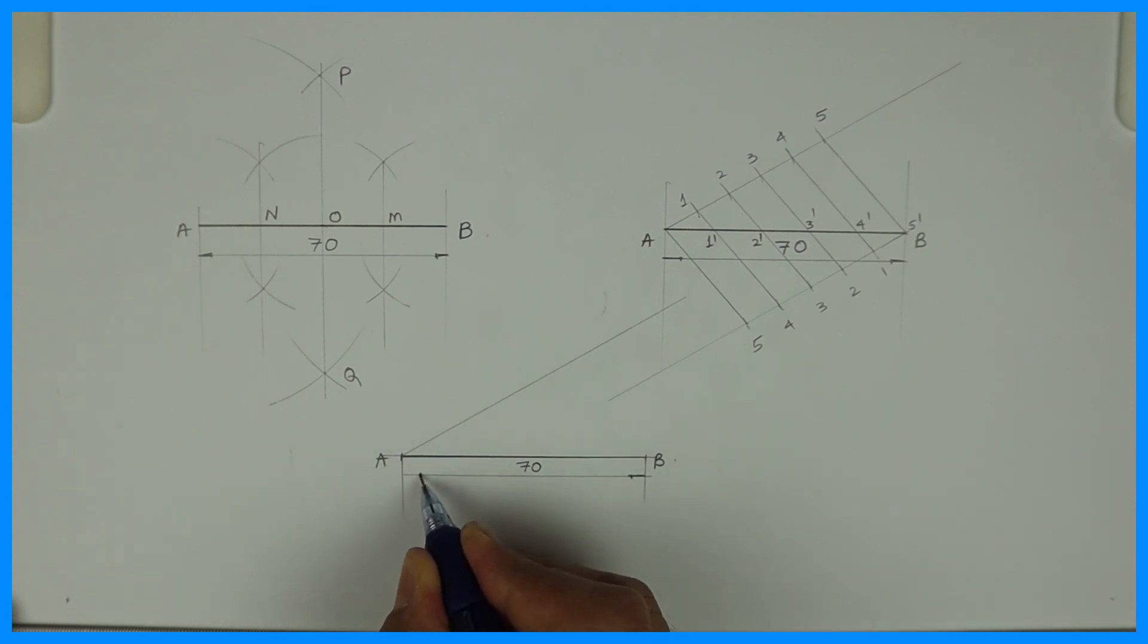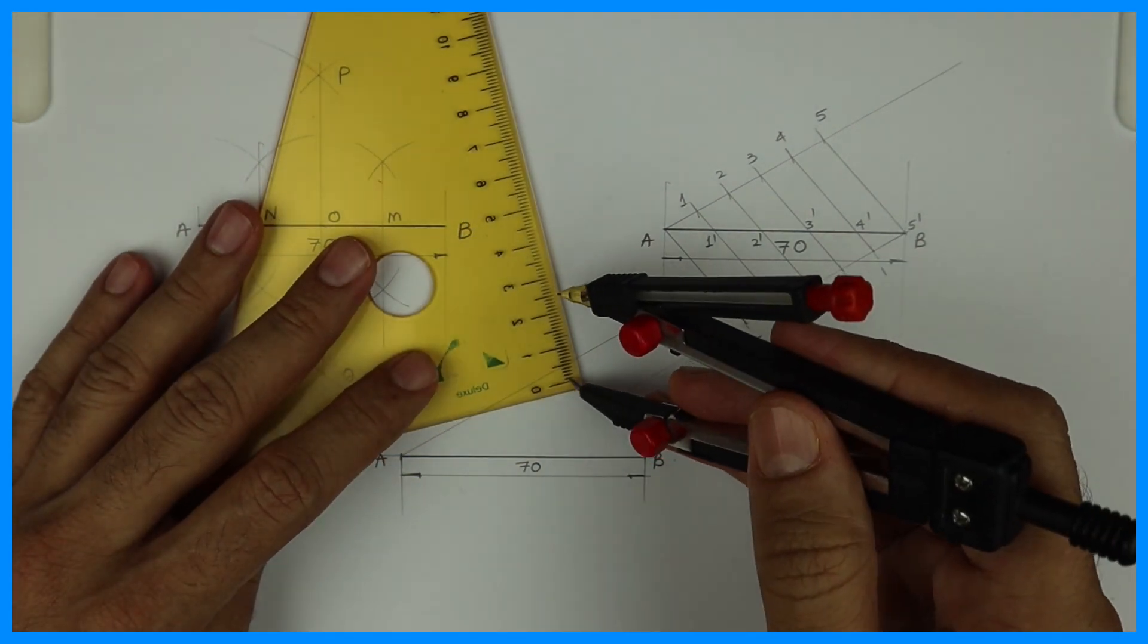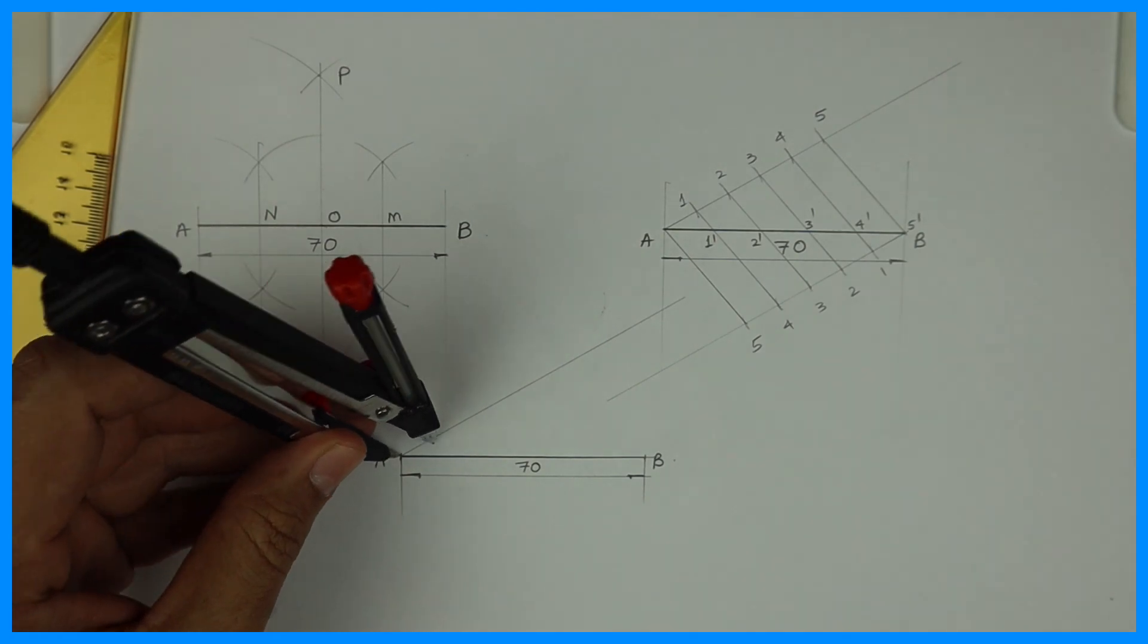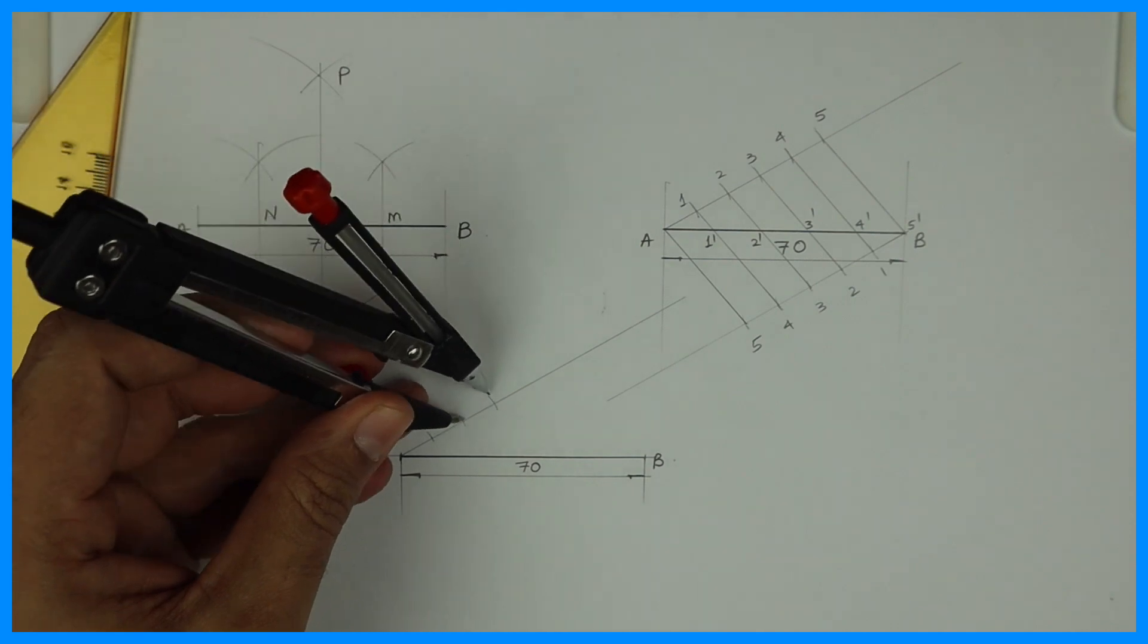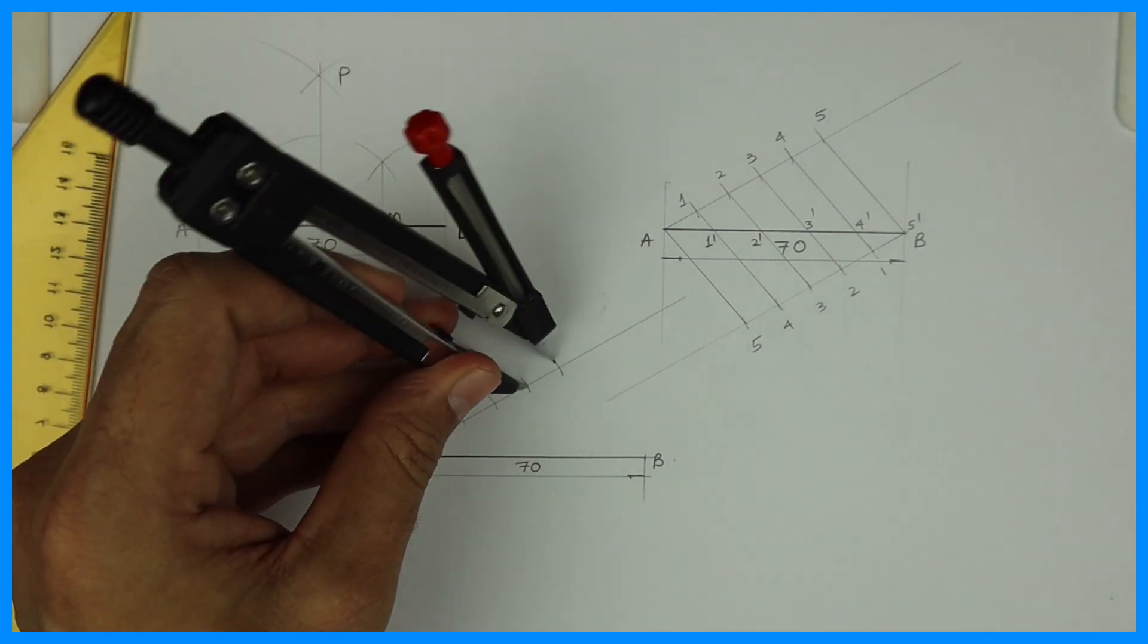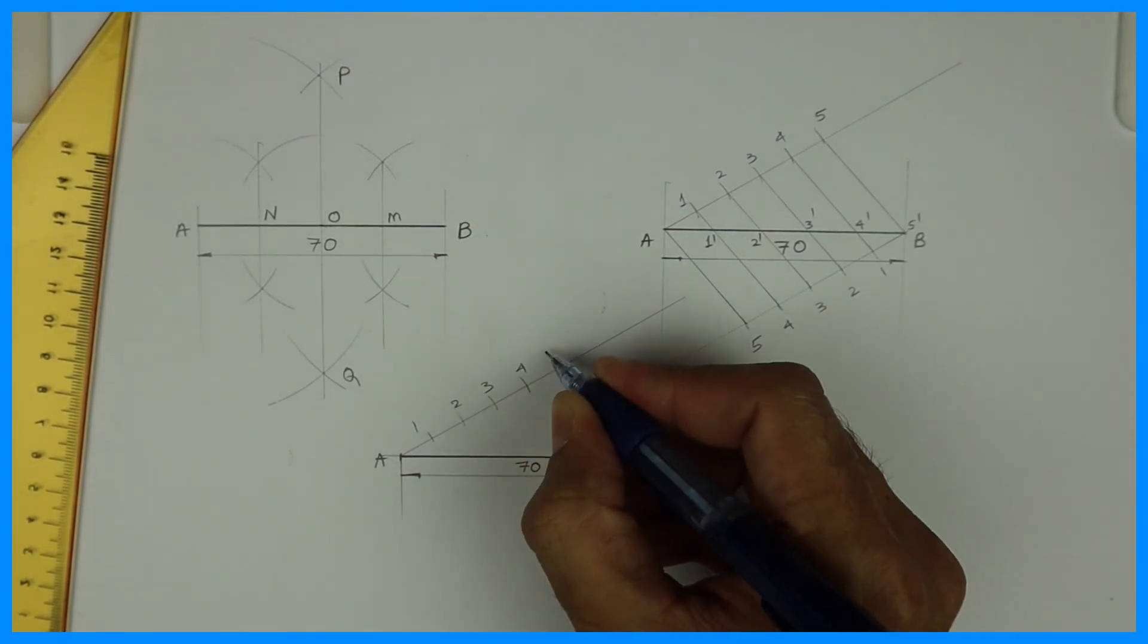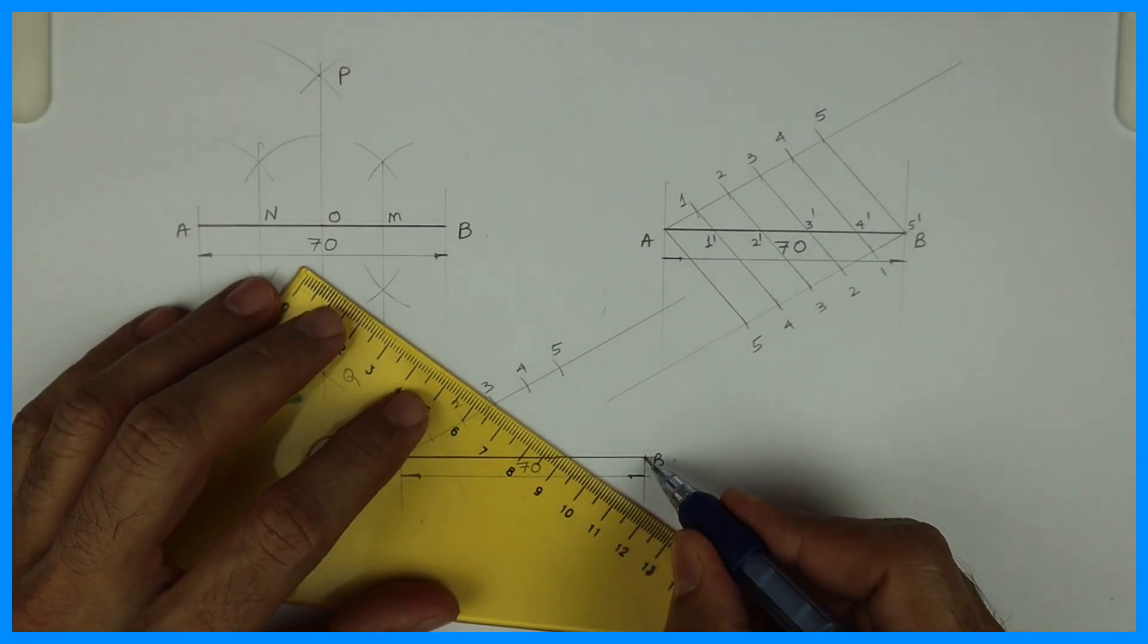So you will draw line AB into 5 parts. After that again you take 1 centimeter, that is 10 millimeter in your compass. And you cut 5 times. 1, 2, 3, 4 and 5. Then join 5 to B.